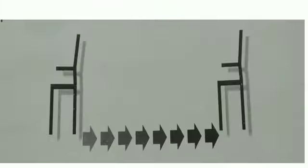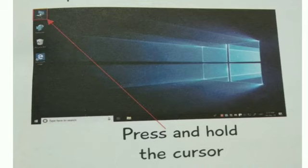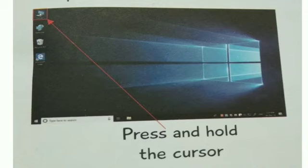How to drag the mouse. See students, in the given picture below, the chair has been dragged and moved from one place to another. In order to drag the mouse, first press the left button with your index finger and, keeping the finger pressed on the left button, move the mouse. Once you reach the place where you want to keep it, lift the finger. This is called drag and drop. To drag icons from one point on the desktop to another, press and hold the cursor, then drag and release the mouse.